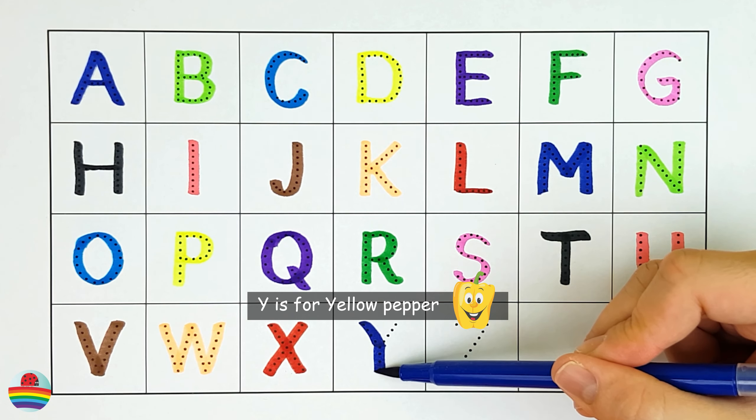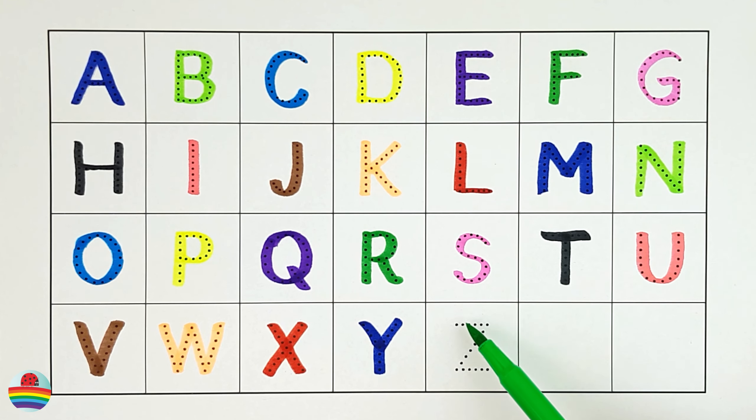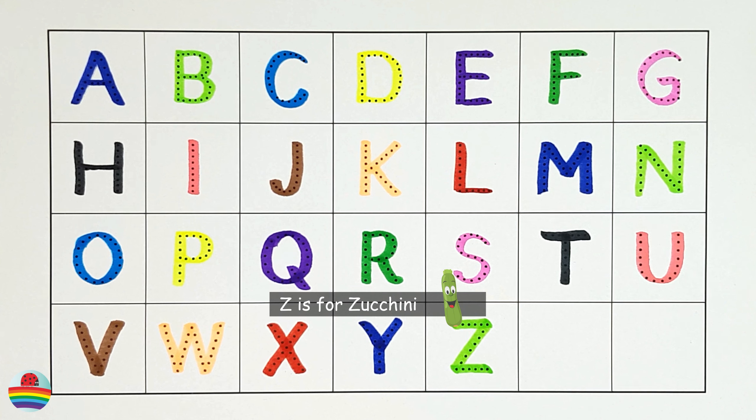Y. Y is for yellow pepper. Y. Z. Z is for zucchini. Z.